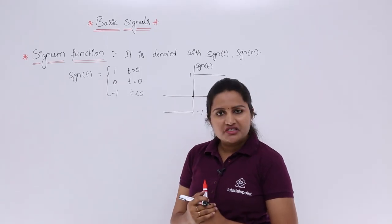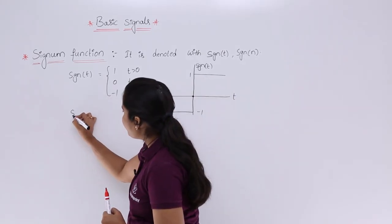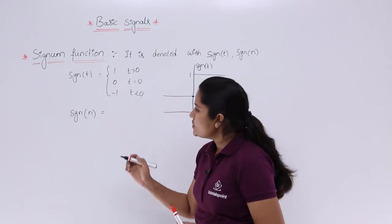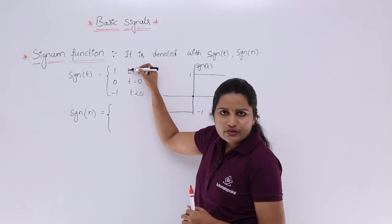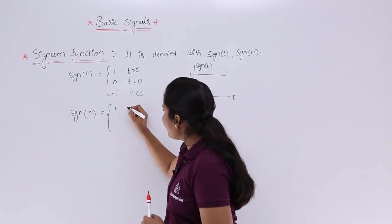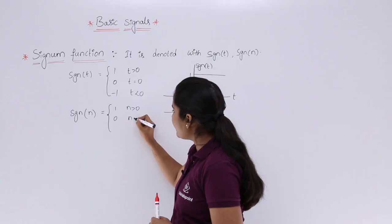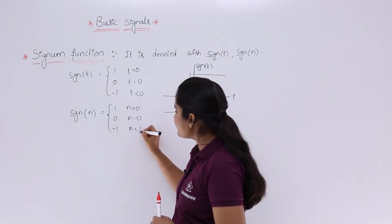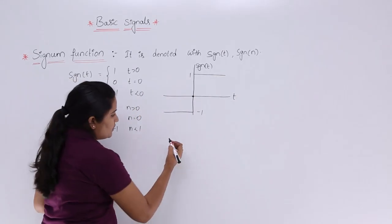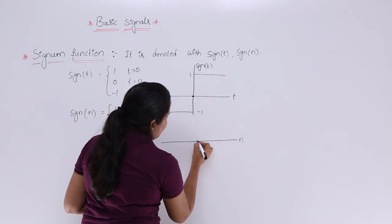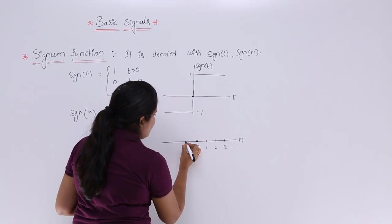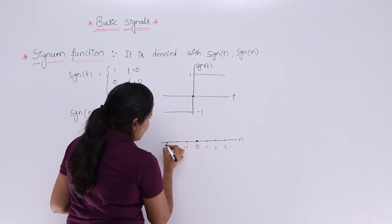The same signum function can also be represented in discrete form. In the discrete sense, the signum function is defined with n as the discrete time variable. The same definition applies except t is replaced by n: sgn(n) equals 1 when n greater than 0, equals 0 when n equal to 0, and equals minus 1 when n less than 0. For the discrete graph, consider the discrete time axis n with intervals 0, 1, 2, 3 and so on, and minus 1, minus 2, minus 3 and so on.